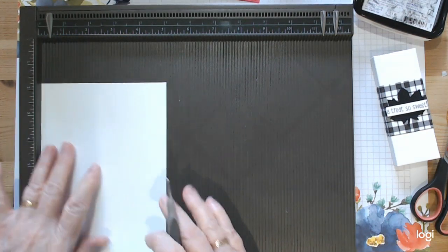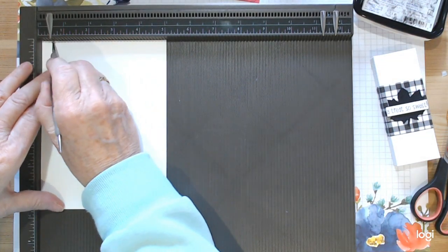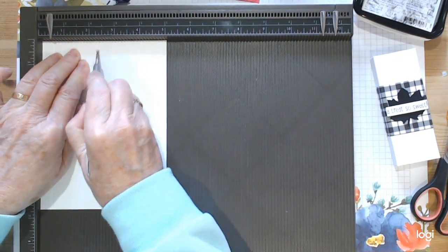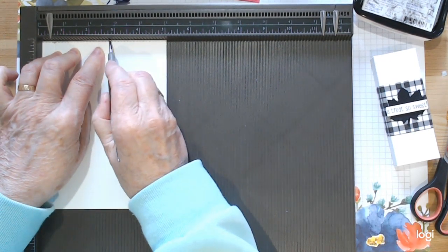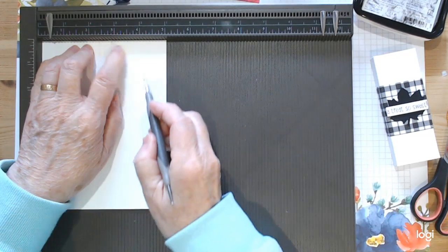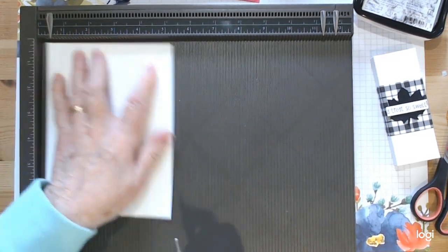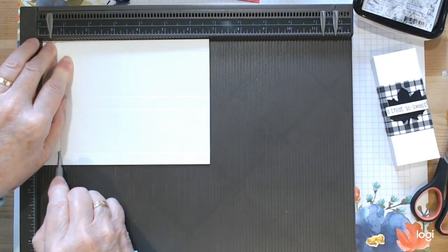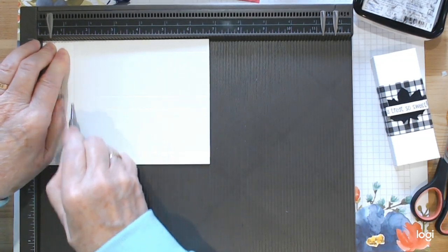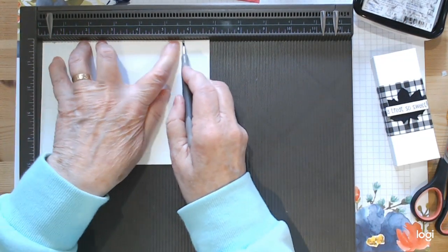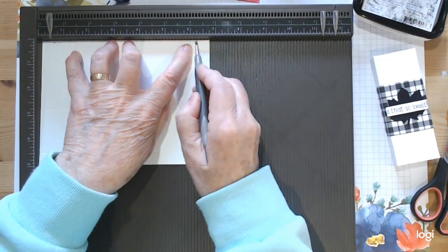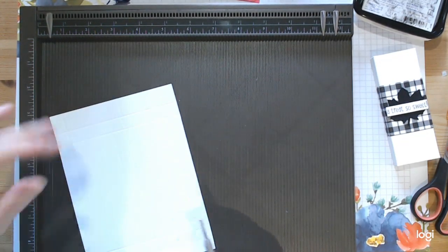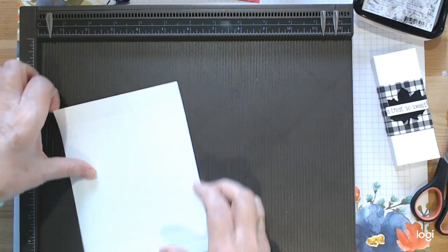So just off cuts that you've used from your cards. We're going to start doing a wee bit of scoring. On the five inch side we're going to score it at half an inch, two and a quarter, two and three quarters, and four and a half.